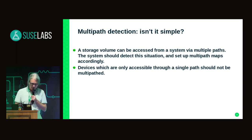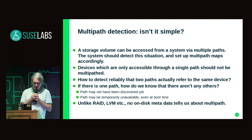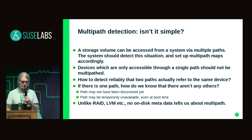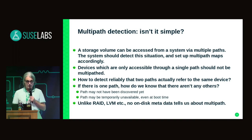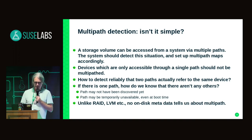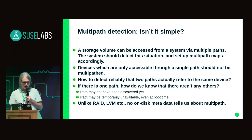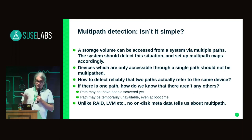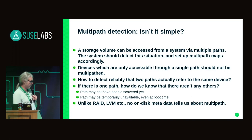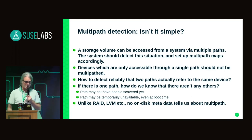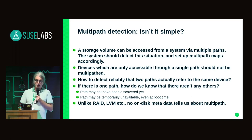It sounds simple. But the first question is: how do I detect reliably that two paths actually refer to the same device? And then the next question is, if there's only one path, how do I know if there aren't any more? A path may simply not have been discovered yet. SCSI device detection is usually quite slow. Or a path may not be available at the time when you are booting. The difference with respect to other layers in the block stack is that unlike RAID or LVM, we don't have any metadata on disk telling us this is a member of a multipath device — there's no such thing. So basically, if we see a device only one time in the system, we have to guess.